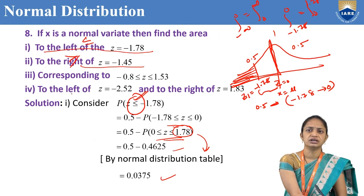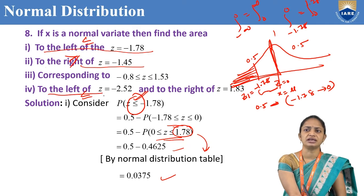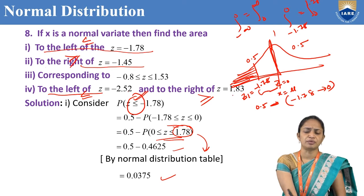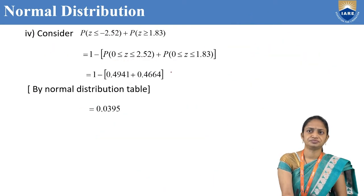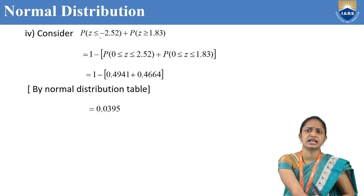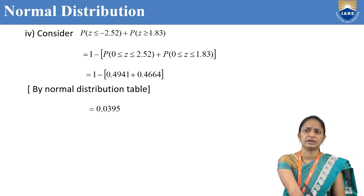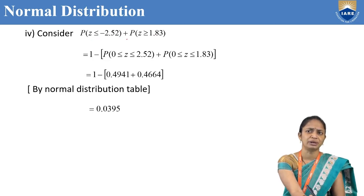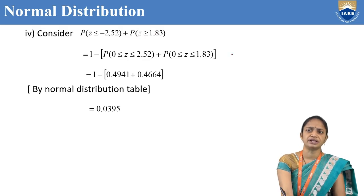For part four, we find the area to the left of z = -2.52 and to the right of z = 1.83. That means P(Z ≤ -2.52) plus P(Z ≥ 1.83). We have one negative value z₁ = -2.52 on the left side, and one positive value z₂ = 1.83 on the right side.